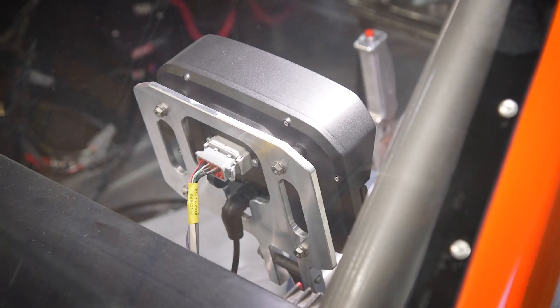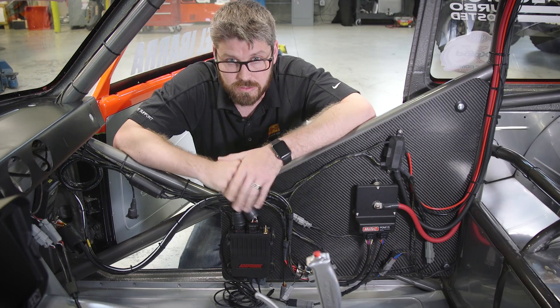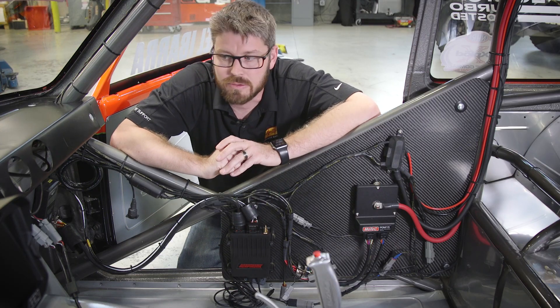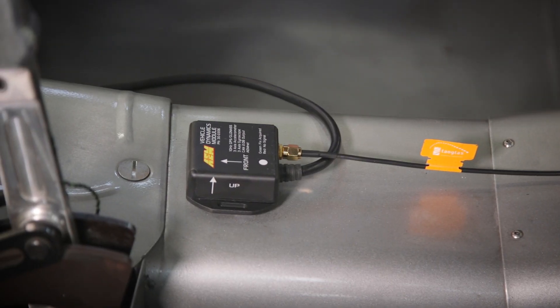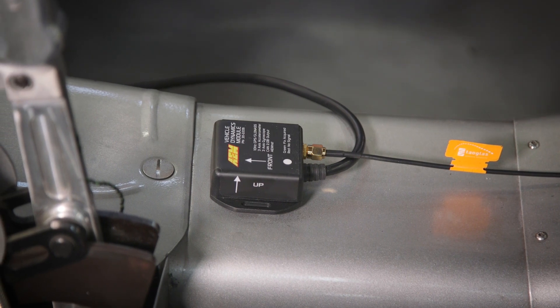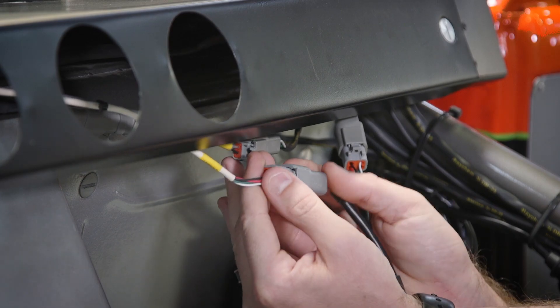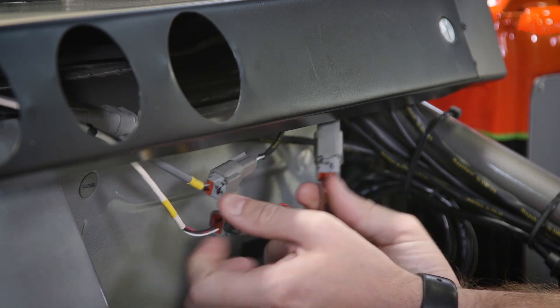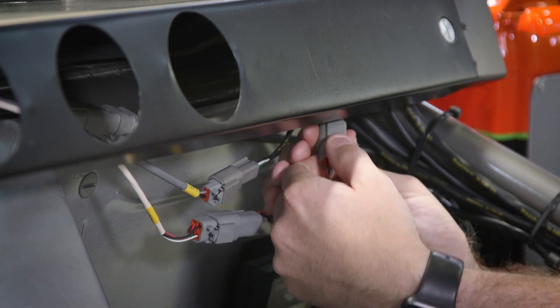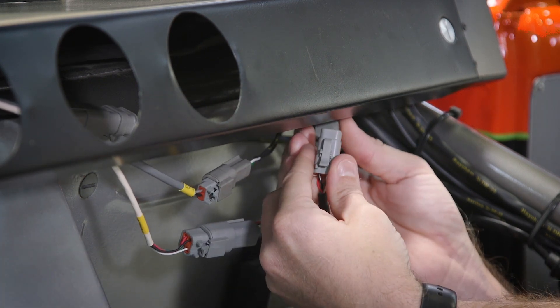Now the dash is installed we can go ahead and explain how this is connected to our M2000 Adaptronic ECU. We've got a VDM vehicle dynamics module installed in the vehicle that connects via AEM net to the dash and we're also supplying power to the dash and the vehicle dynamics module through the AEM net connector.